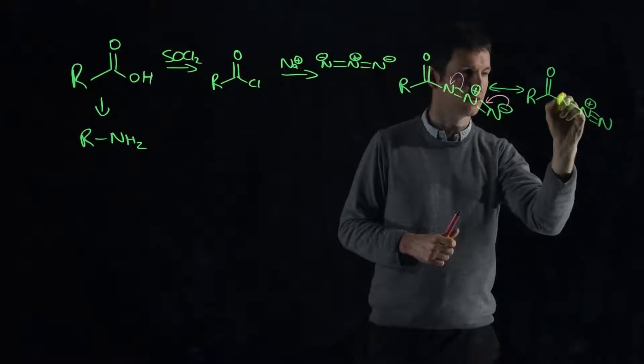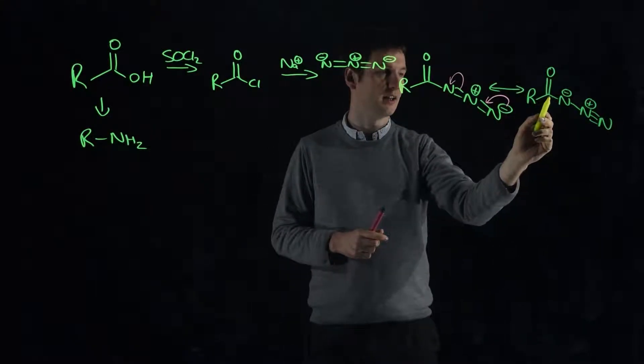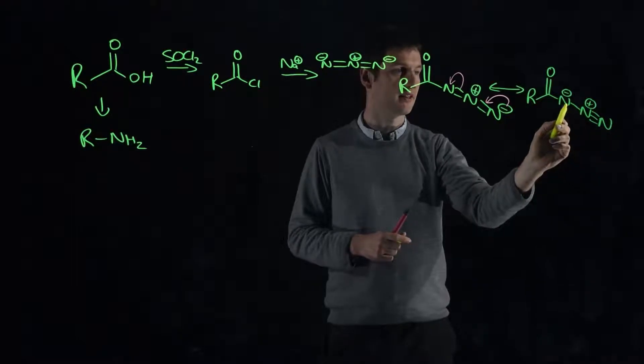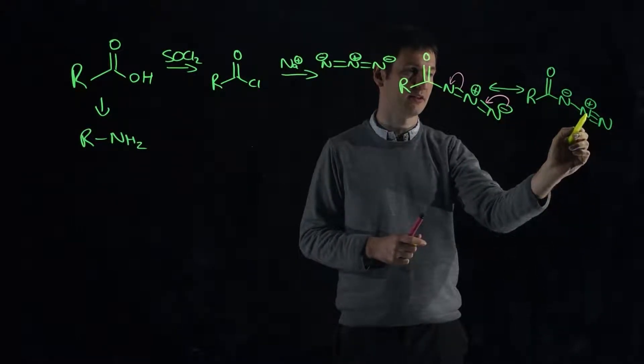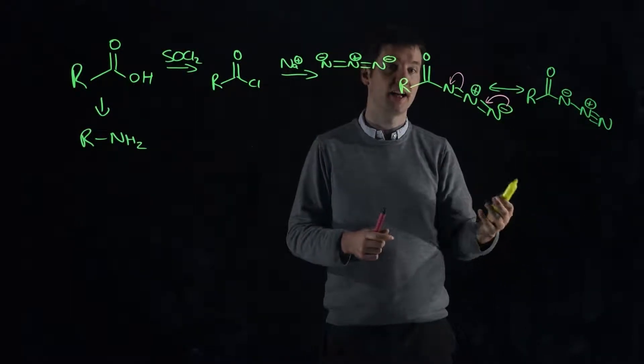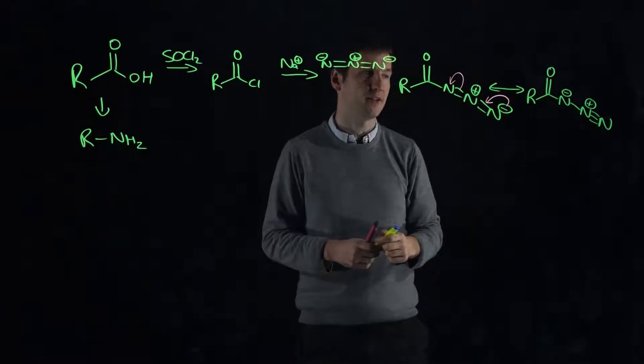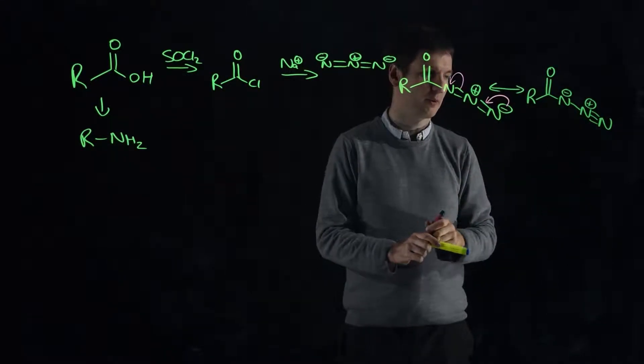If we look at that resonance form, we have a nitrogen-nitrogen single bond and a nitrogen-nitrogen triple bond. This single bond, if it's broken and those two electrons are given to the nitrogen, will have produced nitrogen gas - that's entropically and enthalpically very favorable. You can do that if you heat this reaction up.